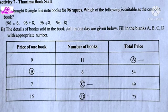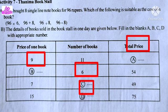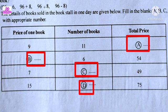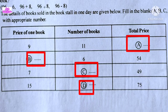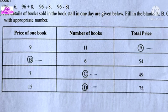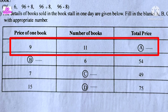The details of books sold in a bookstore in one day are given below. Fill in the blanks A, B, C, D with the appropriate numbers. There are 30 books and columns showing number of books — 9 books and 11 books sold in the next columns. What is the total price?